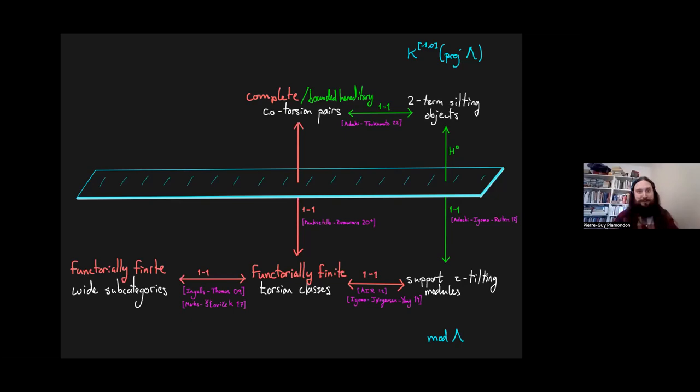A thick subcategory of an extriangulated category is a subcategory that is closed under extensions, under cones, and cocones. Or, if you prefer, it's such that the conflations satisfy the two out of three property. If you have a conflation and two of its objects are in the thick subcategory, then so is the third.